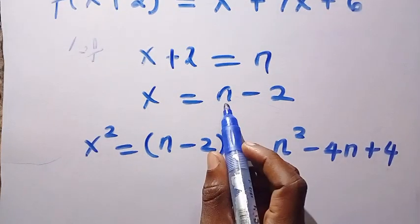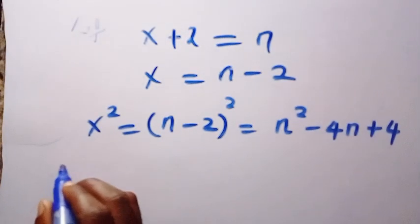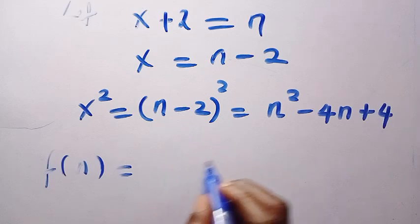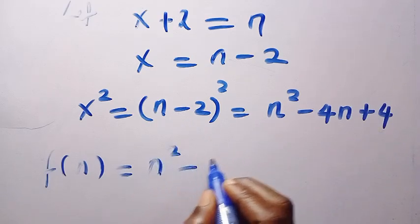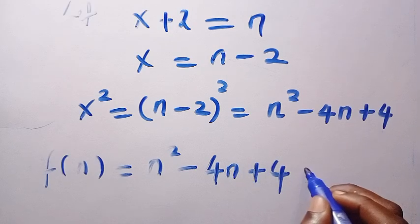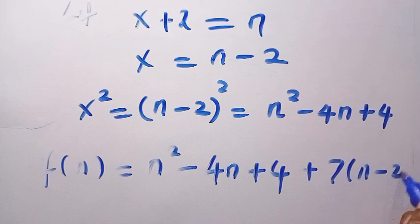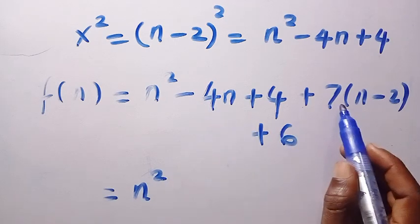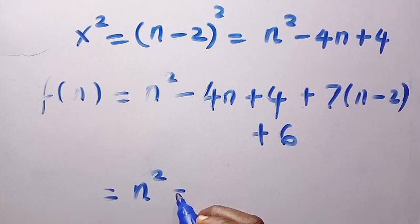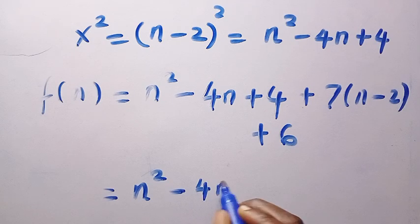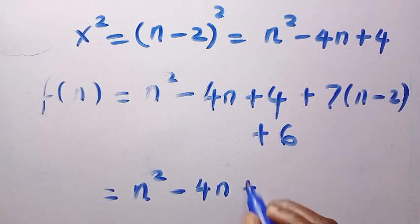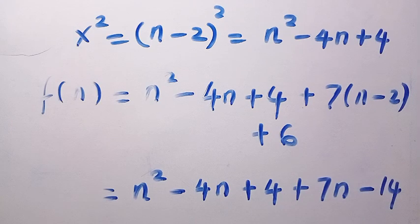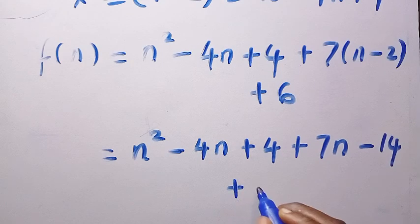And again, we have n already. So let's come back to the question. Instead of f of x plus 2, we change that to f of n equals, instead of x squared, we have n squared minus 4n plus 4. And also 7 times n minus 2, then plus 6. On getting this, we have n squared minus 4n plus 7n, that gives us plus 3n. We have minus 4n plus 4 plus 7n minus 14 and plus 6.